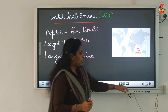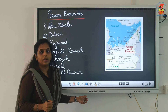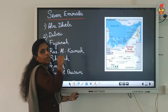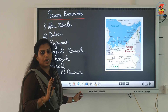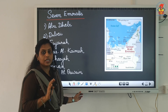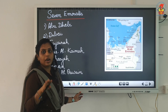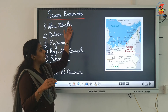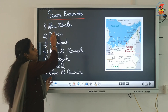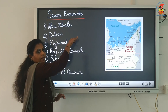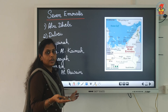UAE has seven emirates. An emirate is an area which is ruled by a king called an Amir. There are seven emirates in UAE, each ruled by a different Amir.